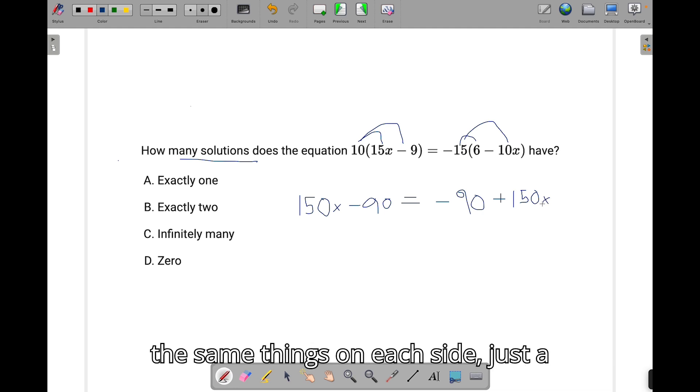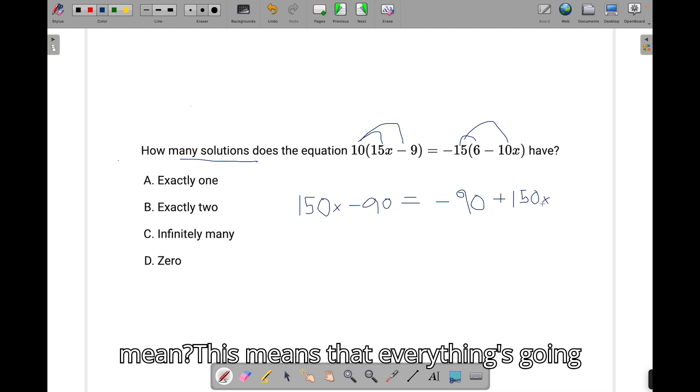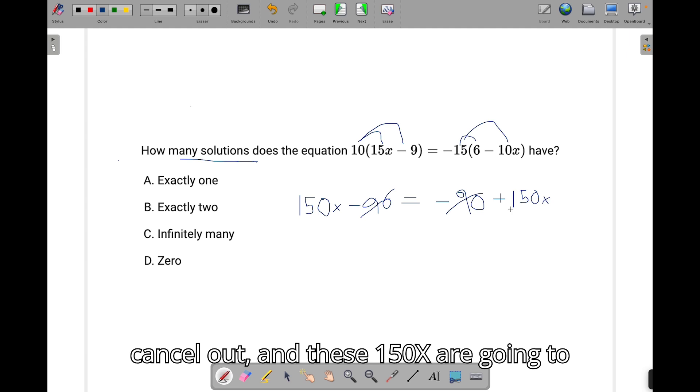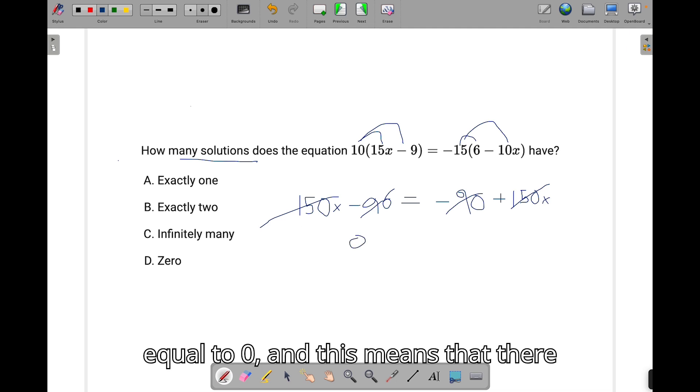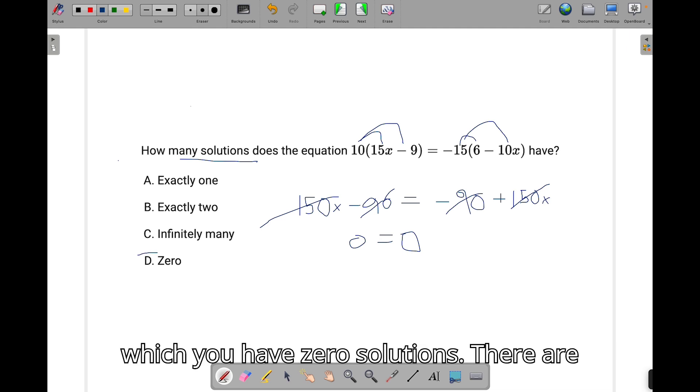Alright, so now that we've distributed everything, you're going to see there's the same things on each side, just a different arrangement. What does this mean? This means that everything's going to cancel out. These 90s are going to cancel out, and these 150x are going to cancel out. You don't even need to figure out what x is in this problem. What this means is you're going to have 0 is equal to 0, and this means that there is no solutions to this. There's no value x that will make this correct. It's just all going to cancel out, but you're going to have 0 solutions.